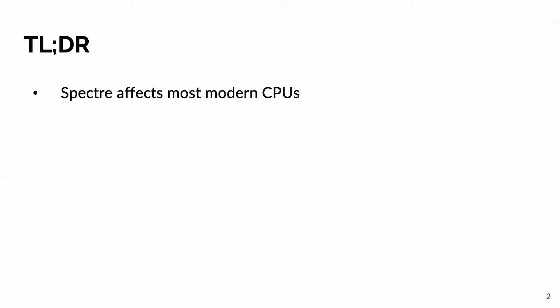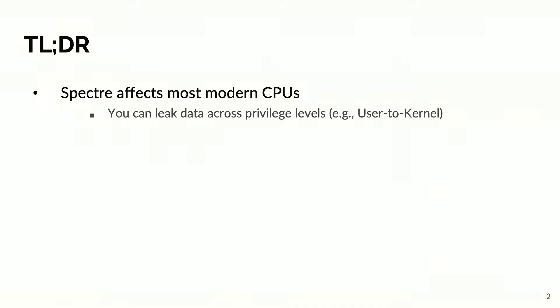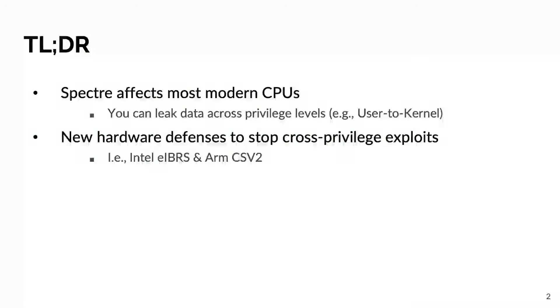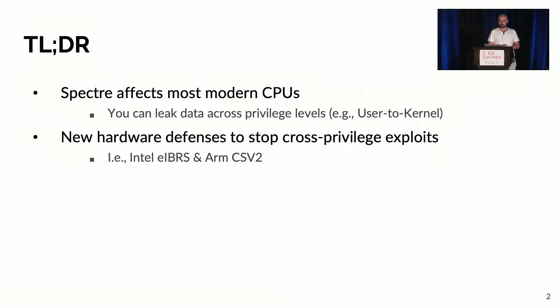This project is about Spectre, and I guess most of you are familiar with this vulnerability. It's a vulnerability that affects most modern CPUs, and one of the many reasons why it was considered very interesting from the beginning was that it allowed cross-privilege attacks. For instance, you could leak kernel data from user space, and because of this, vendors started releasing all sorts of mitigations to stop cross-privilege exploits.